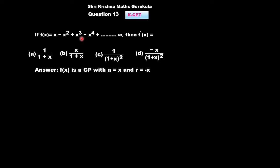Now, look at the series. If you closely observe, this is a GP with first term a = x and common ratio r = -x.